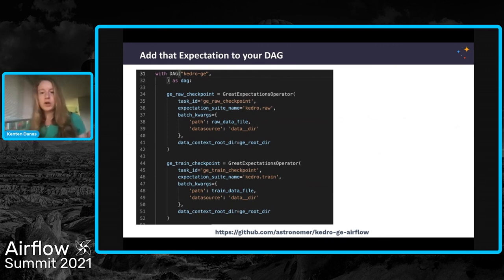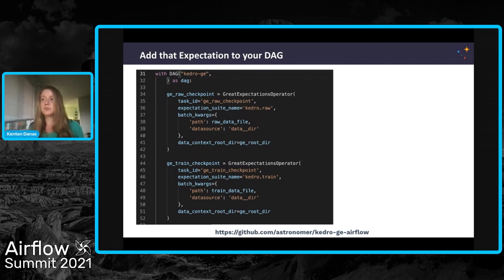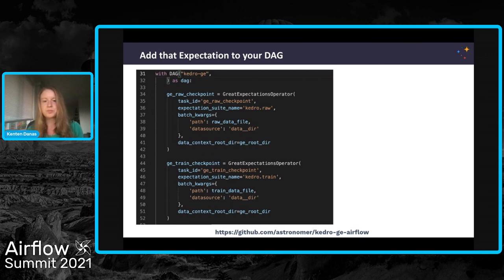Going back to my DAG code, you can see that I've implemented these checks as tasks in my DAG using the Great Expectations operator from that provider package. When I use that, I simply define where my data is living — that's with the path and the data source — and then point the operator to the expectation suite that I want to run against that data using the expectation suite name. It's super simple to set up. In terms of writing your DAG, it's just a couple of operators with some pretty basic input parameters. If any of the data doesn't meet the expectations in those checks, my pipeline will be stopped and I'll be notified.